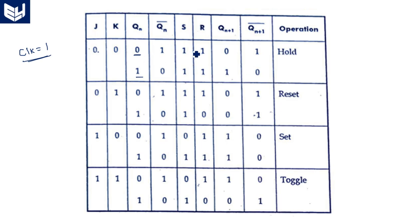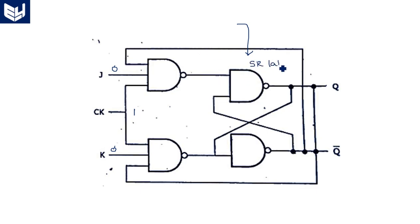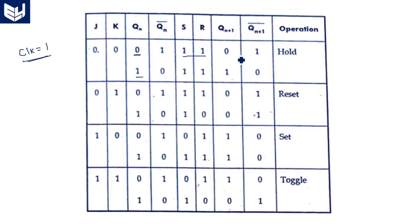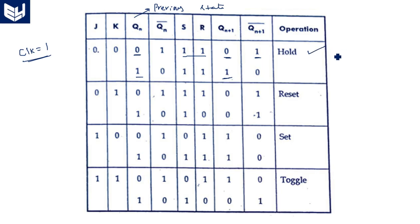When J=0 and K=0, Q equals 0 and Q bar equals 1 if the previous state was 0. S and R are both 1 because it is an SR latch, giving output 0 and 1. As the previous state is retained, we call this operation the hold state — whatever the previous state is, the same state comes as the output.